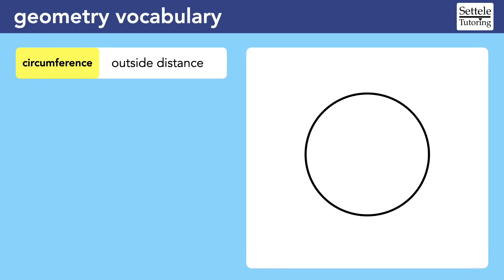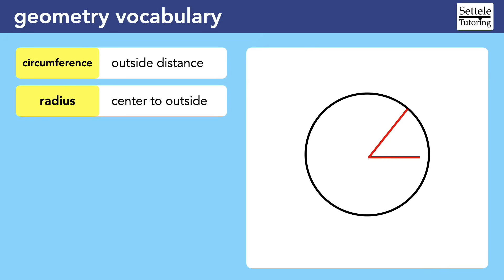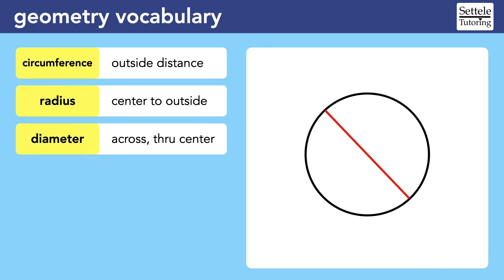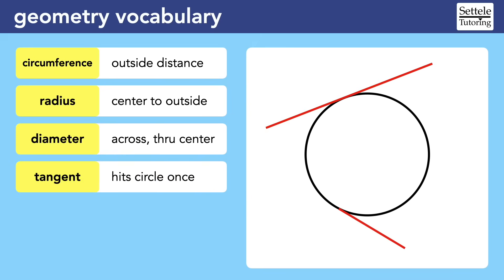Circles have their own unique vocabulary. The perimeter of a circle is called the circumference. The radius is the distance from the center of the circle to any point on the circle. The diameter is twice the radius — it goes completely across the circle through the center. If it doesn't go through the center, it's simply called a chord. A tangent line touches the circle exactly once; the line typically continues past the circle, but we can also have a segment that is tangent to a circle and stops at the point of tangency.